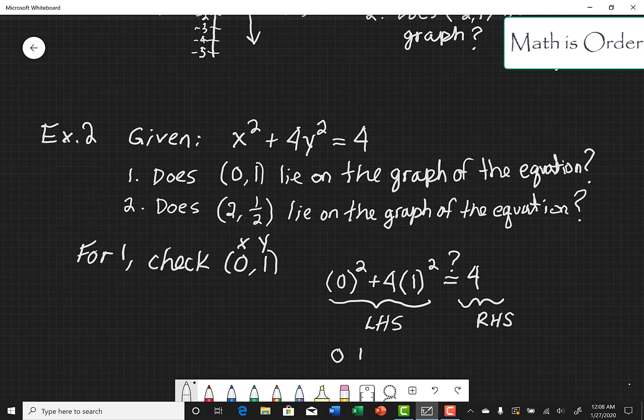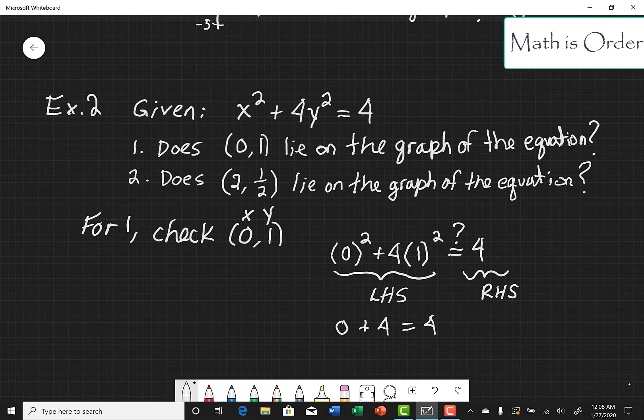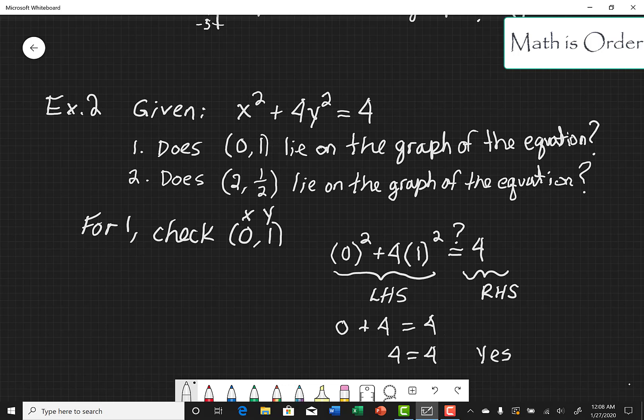So we're coming with 0 plus 4 which is equal to 4. So we can see that the left hand side is equal to the right hand side. So yes, (0,1) lies on the graph.